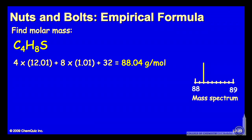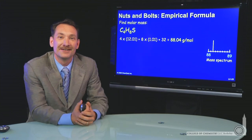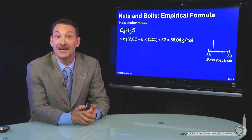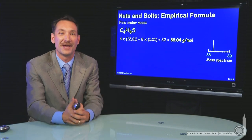4 times 12 for the molar mass of carbon, 8 times 1 for the molar mass of hydrogen, and 32 for the molar mass of sulfur. That's 88.04 grams per mole. So this empirical formula has the same mass as the molecular formula. So in this case, it's like methane. The empirical and molecular formula are the same.